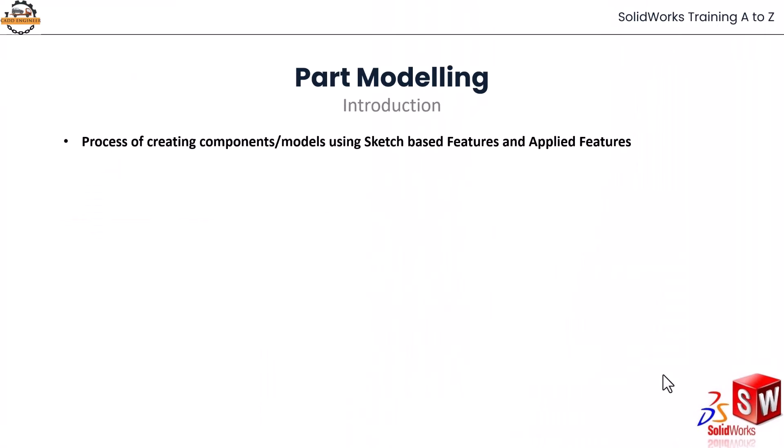Part modeling is a process of creating components and models using sketch-based features and applied features. Sketch-based features are those where we make a 2D sketch and convert it into 3D using tools like extrude, revolve, sweep, and loft commands. Applied features are those where we have an existing 3D model and apply features like fillets and chamfers to modify it.